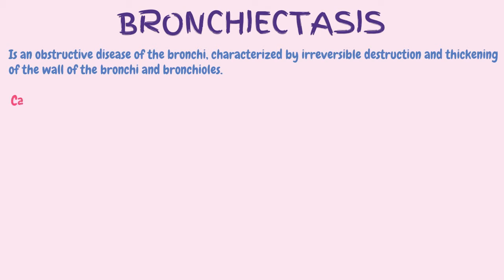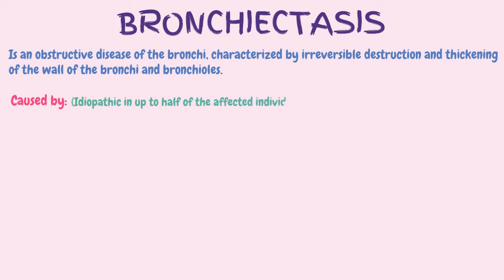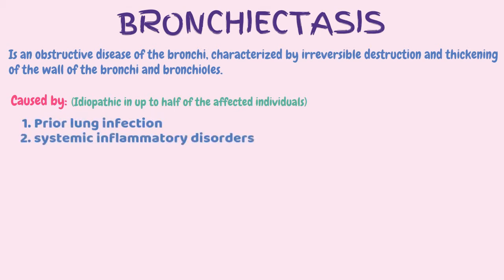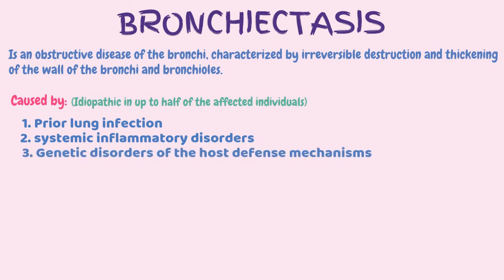Bronchiectasis results from a variety of pathological processes that cause destruction of the bronchial wall and its surrounding supporting tissues. Bronchiectasis is considered to be idiopathic in up to half of the affected individuals. It can be formed in the following situations: prior lung infection, systemic inflammatory disorders, genetic disorders of the host defense mechanisms, and bacterial pneumonia, which is the most common cause of bronchiectasis.